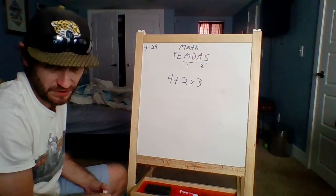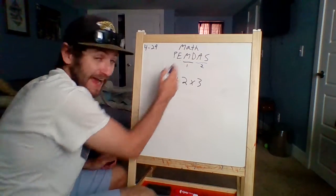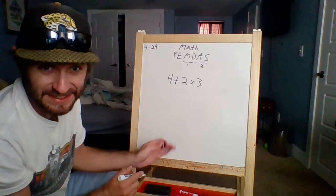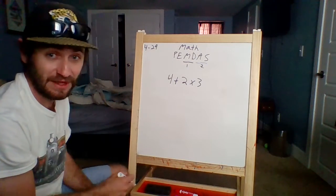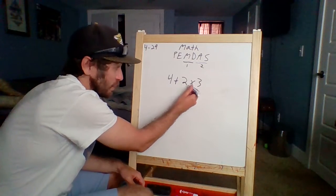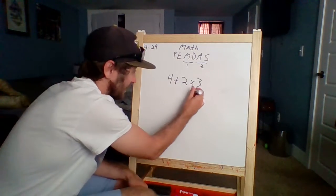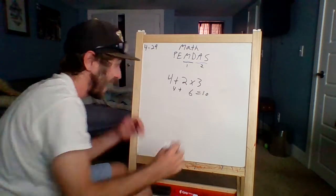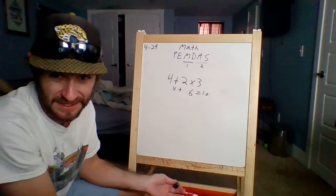What do I have to do first? I've got to do the multiplication and the division before I do any addition and subtraction, even though it's on the left side. So it's not 18 because I'm going to do two times three first. Two times three is six. Four plus six equals ten. Make sense?